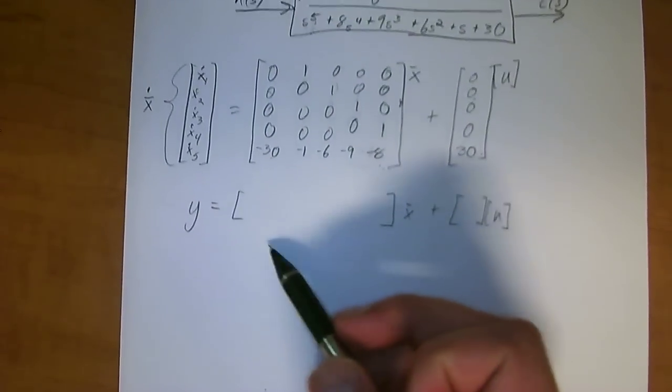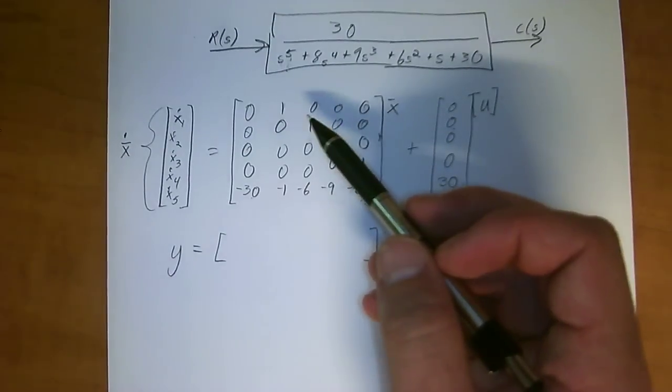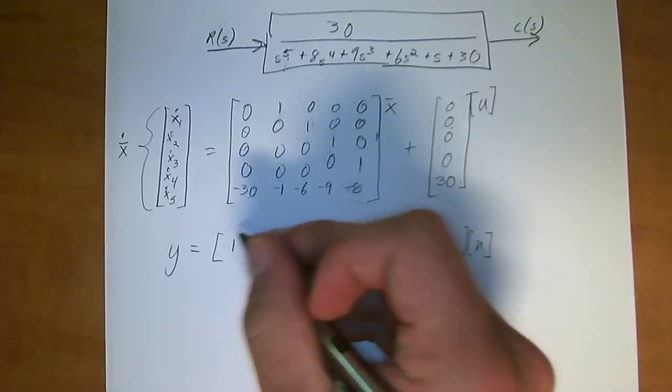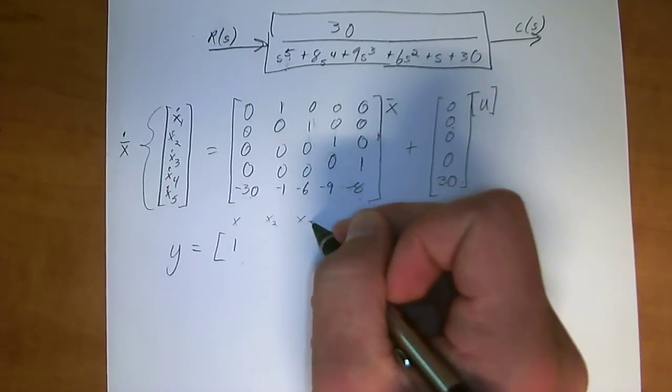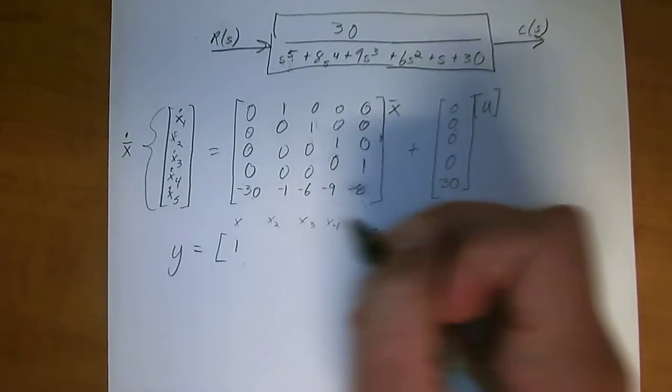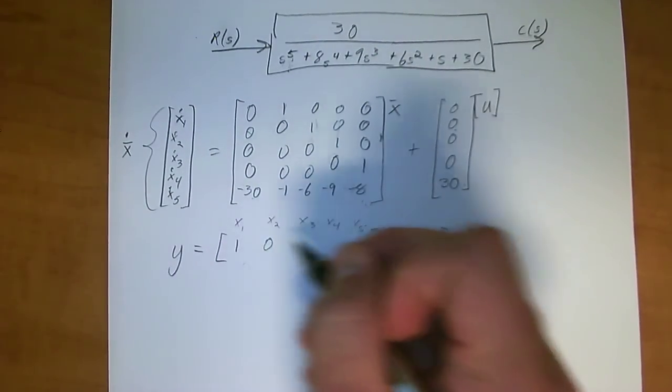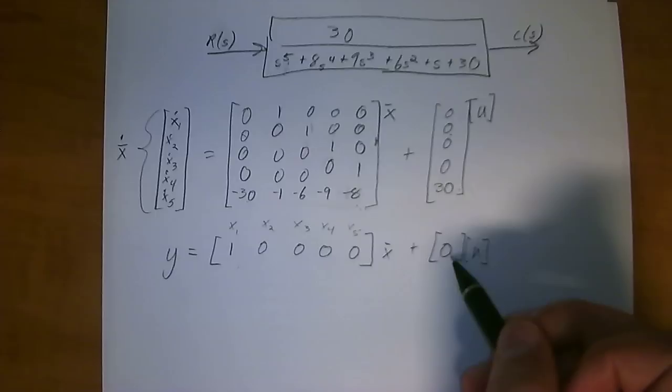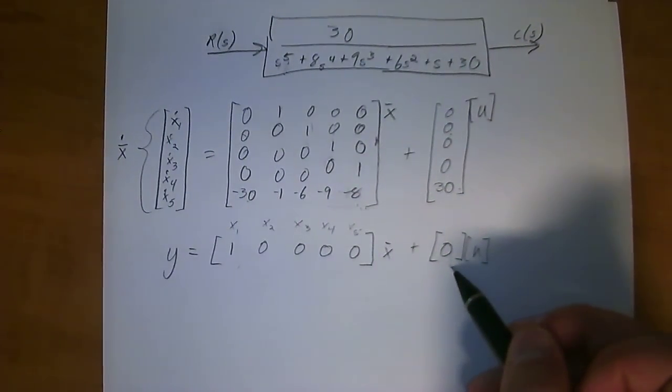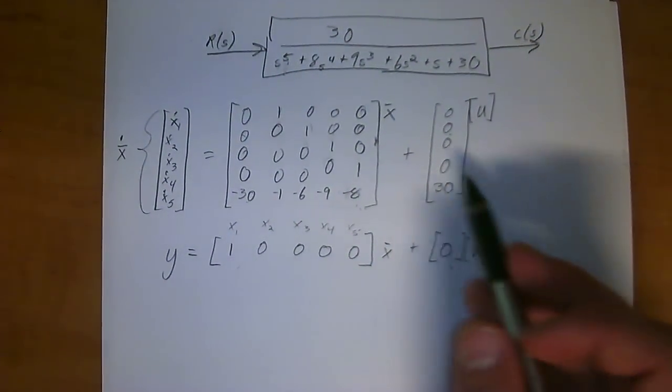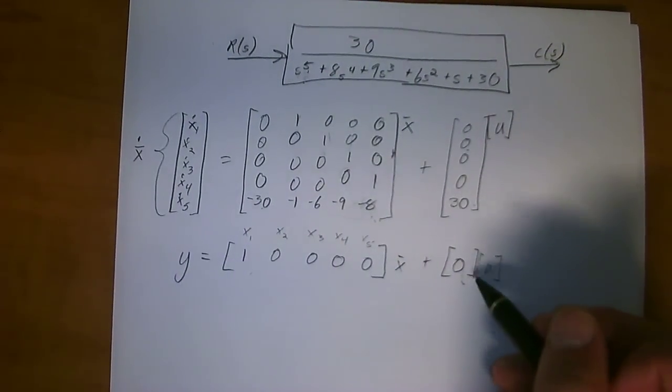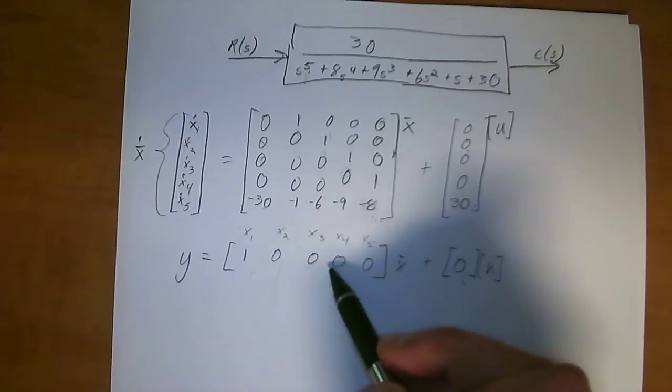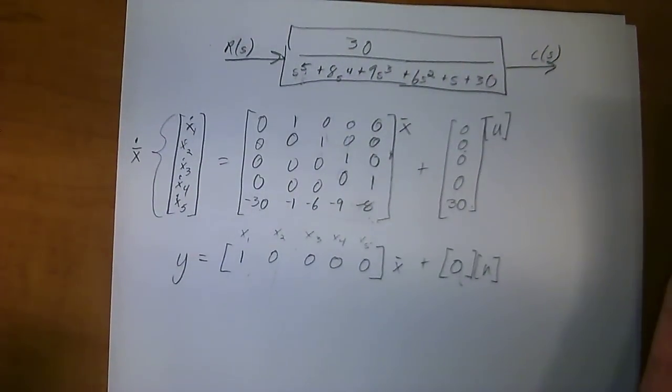And then moving on, if you want the Y output, the output actually wasn't defined in this problem of exactly what it is. If you were looking for an output of X1, then you put 1 in the X1 space. You can look at this as X1, X2, X3, X4, X5 across this vector. If you're looking for the output of X1, then it's 1 in that space of the vector. This value is almost always zero. For the standard transfer function, this value is always zero. And whatever you're trying to find, you put a 1 in that spot.